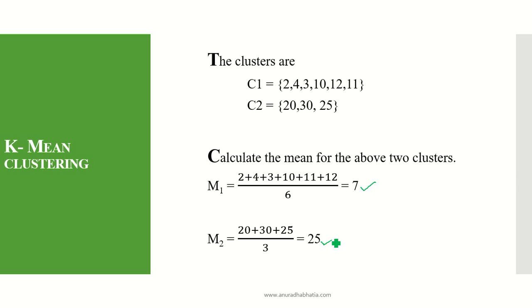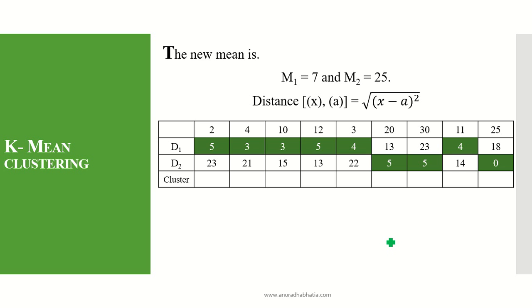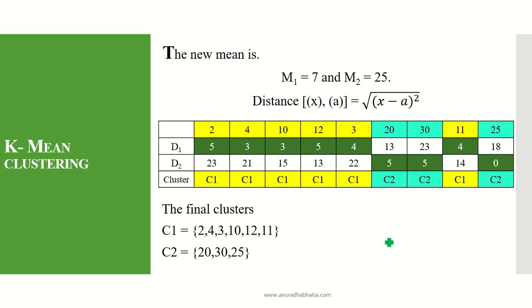With the new mean values M1=7 and M2=25, we calculate the distance matrix again. You will see that the minimum portions are highlighted and there is no movement of the item sets between the clusters. They remain the same: 2, 4, 3, 10, 12, and 11 stay in C1, and 20, 30, 25 stay in C2. So we can say the final two clusters are C1 with 2, 4, 3, 10, 12, and 11, and C2 with 20, 30, and 25.